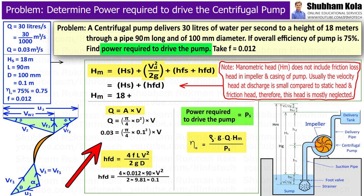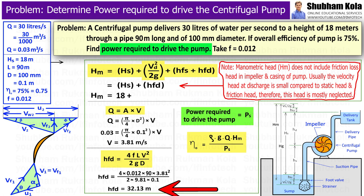So, by calculating this, we will get velocity of flow capital V equal to 3.81. So, we will put this value as small g is 9.81 and capital D, that is diameter of pipe, equal to 0.1 metre. So, by calculating all this, we will get friction loss head equal to 32.13 metre.